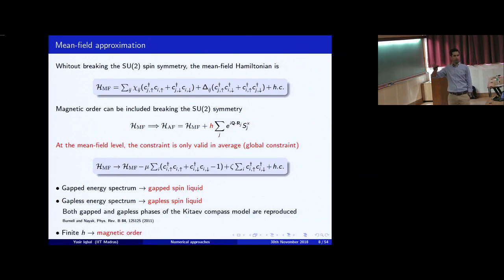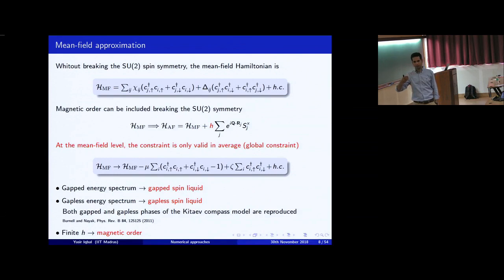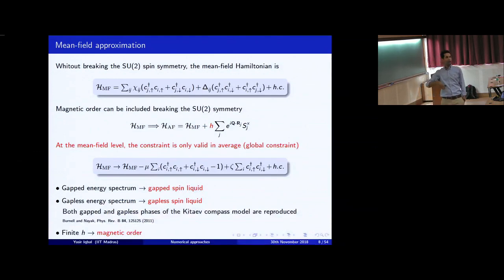You diagonalize the Hamiltonian, get the spectrum, and obtain a mean field wave function which is of course wrong because it lives in the incorrect Hilbert space — it has both double occupancy and empty sites. You cannot treat this problem analytically: you need to do Monte Carlo sampling, configuration by configuration, remove all the doubly occupied and empty sites, and then you land up with a strongly correlated wave function.